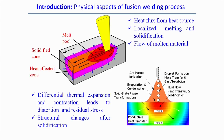Considering all these physical activities involved and representing them in a mathematical model, it becomes more and more complex. We can look into them one by one — first the thermal aspect, then the metal flow aspect, and finally the solidification, meaning residual stress and distortion aspect.